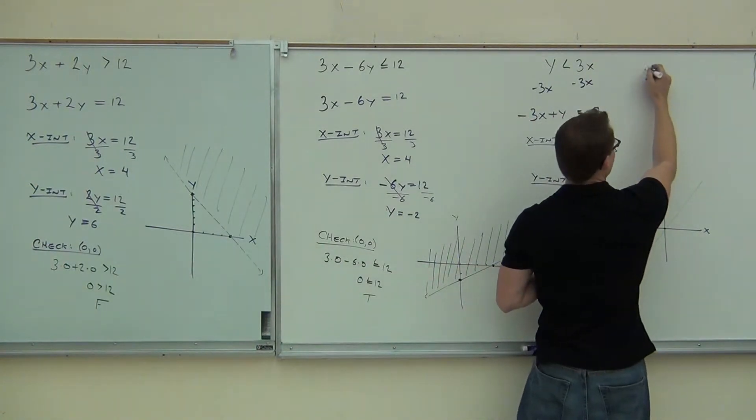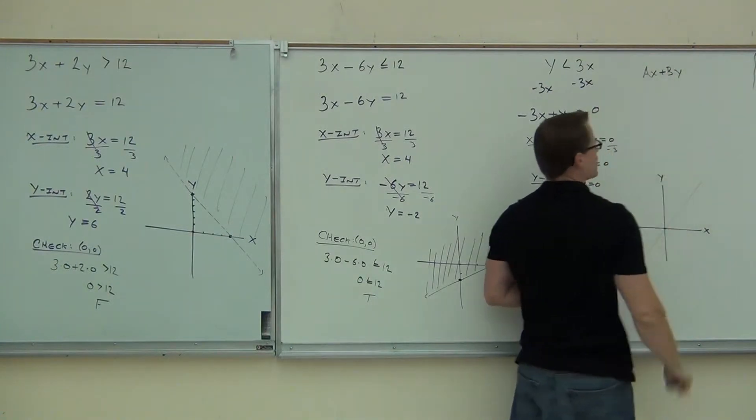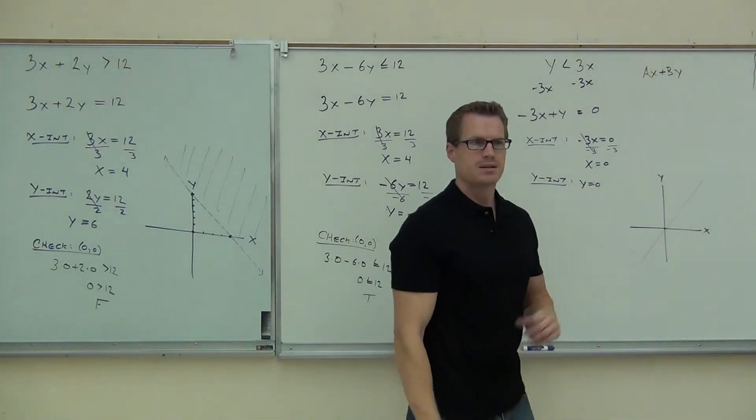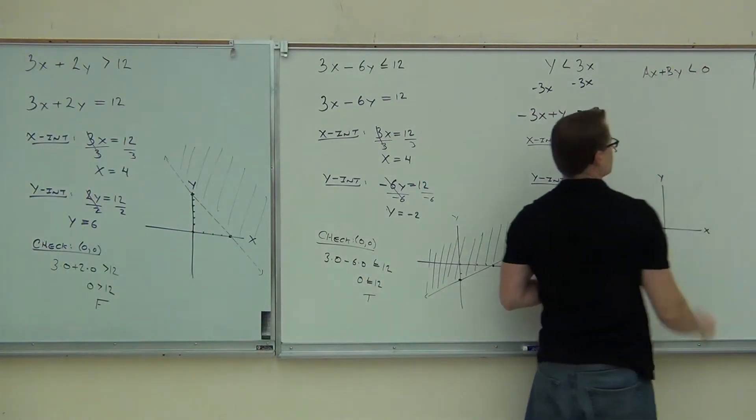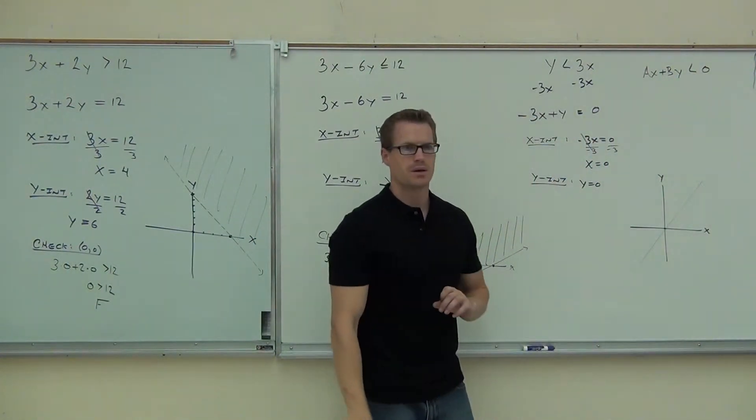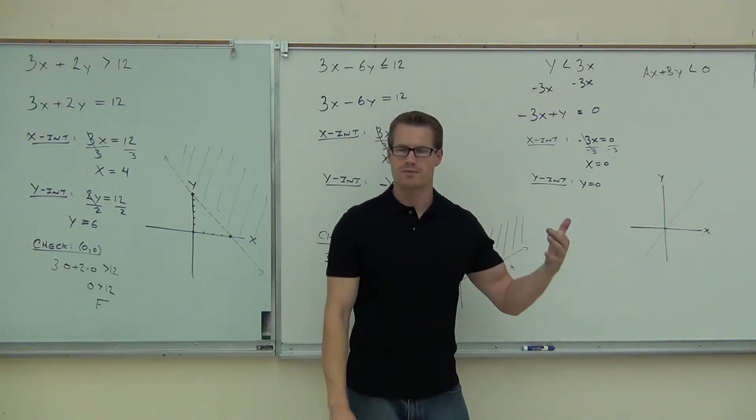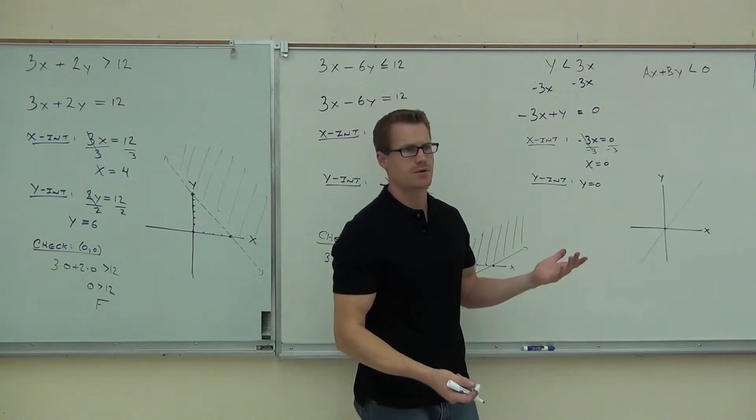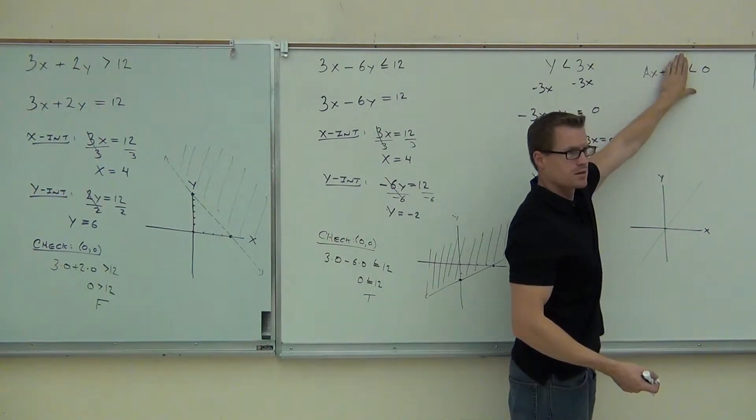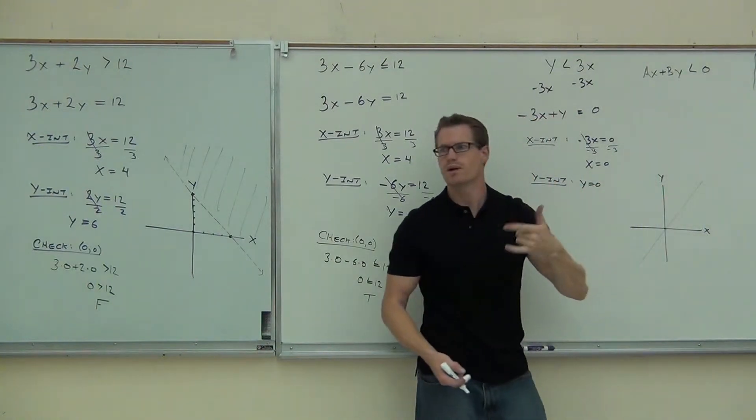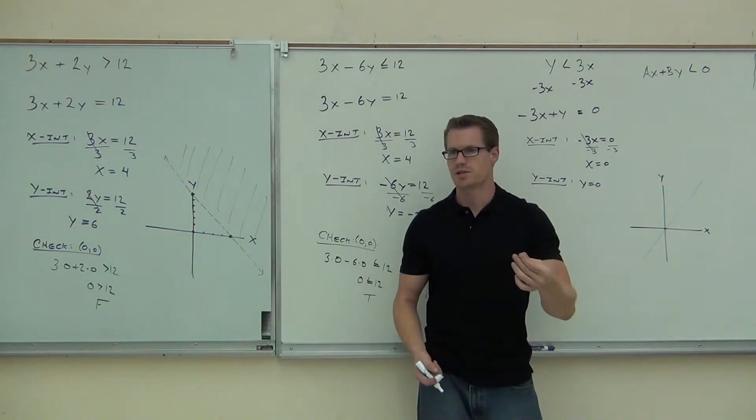If you have Ax plus By less than, greater than, less than or equal to, greater than or equal to, whatever the inequality is, and a 0 over there, you cannot use the standard form version of graphing line. Because look what happens, folks. If you cover this up, you get 0. If you cover that up, you get 0, right? That means you get the same point twice. There's no way to graph a line with the same point twice. You can't do that. If you have this, you must use slope intercept.